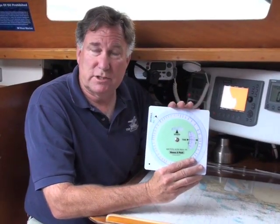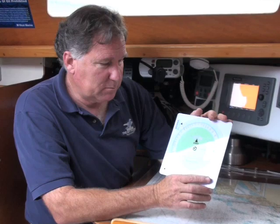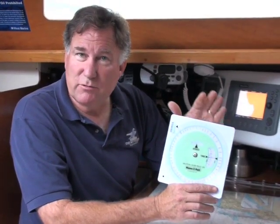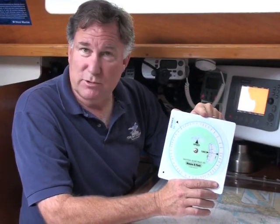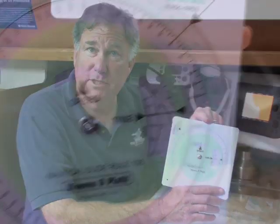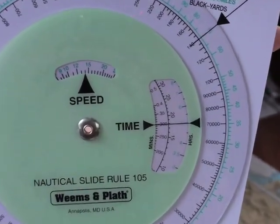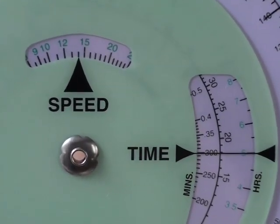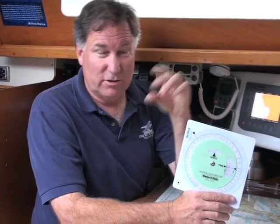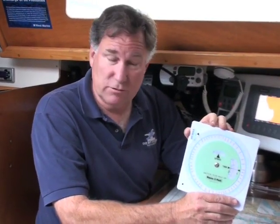One of the first and most useful is a time-speed-distance calculator — in this case, one made by Weems and Plath. Before we had electronic calculators, a lot of people used circular slide rules like this one to calculate the third variable in a time-speed-distance problem. If you know your time and your speed, you can calculate your distance. If you know your distance and your time, you can calculate your speed, and so forth.